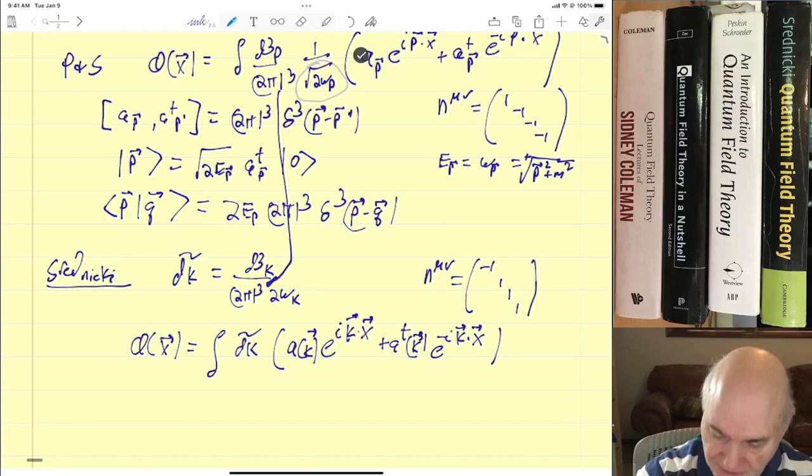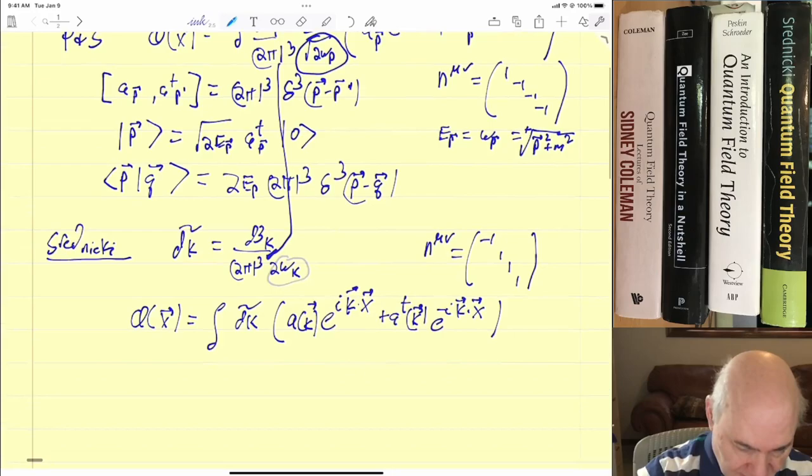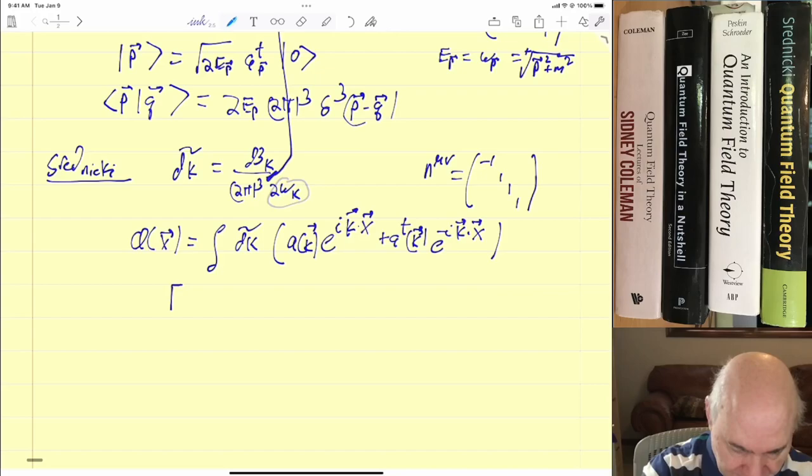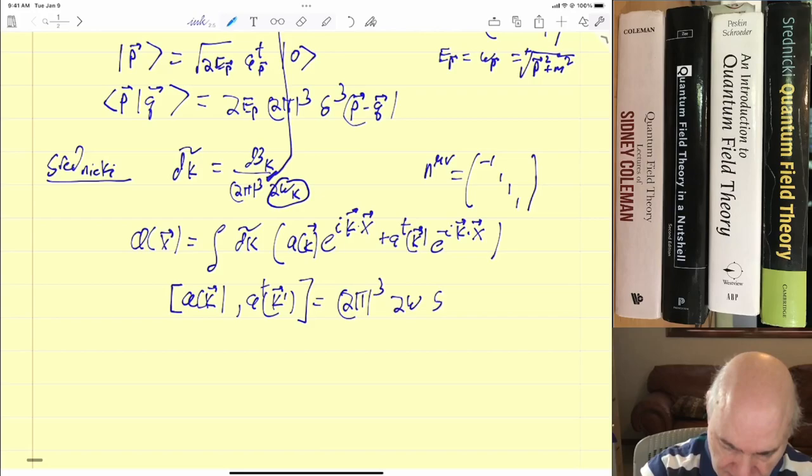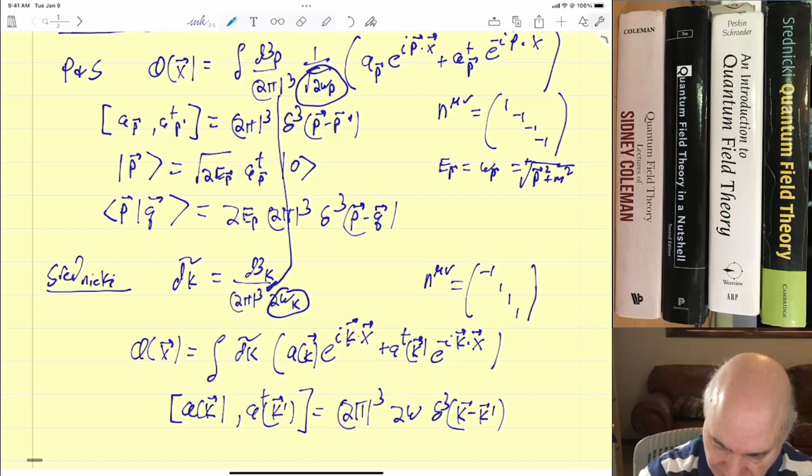But here's a square root, and here is a 2ω without a square root. So keep that in mind. And then he defines the commutation relations. It seems like he's using the exact same commutation relations, but you see he's got the same (2π)³ and the delta's the same, but now he has a factor 2ω. Of course Peskin and Schroeder don't have that because he's got an extra 2ω in the denominator.